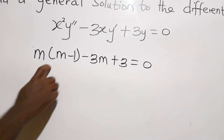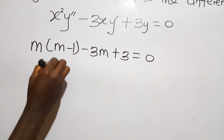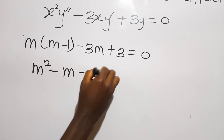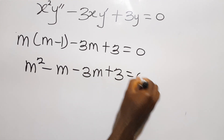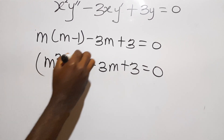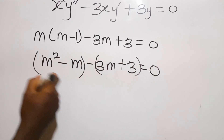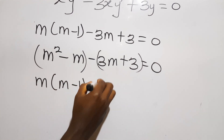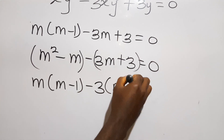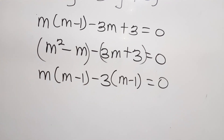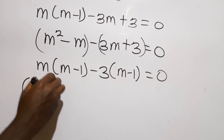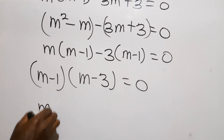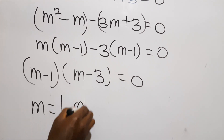Expanding the bracket: m squared minus m minus 3m plus 3 equals 0. Grouping the first two and last two terms: m(m−1) minus 3(m−1) equals 0. Factoring out (m−1): (m−1)(m−3) equals 0, giving m equals 1 or m equals 3.